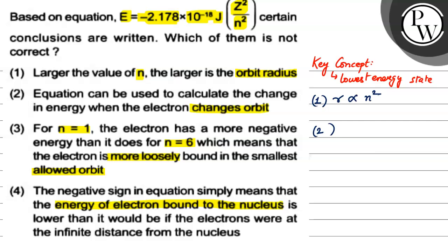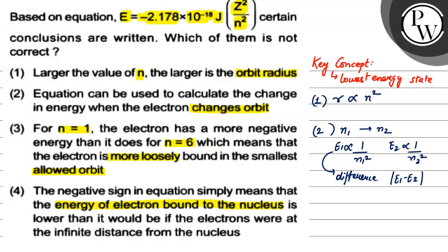Option two: the equation can be used to calculate the change in energy when the electron changes orbit. This is right. Because if we consider N1 as the first state and N2 as the second state, we can write E1 proportional to 1 by N1 square, and E2 proportional to 1 by N2 square, according to the formula given. From this equation, we can find the difference E1 minus E2, which is the energy change when the electron changes orbit. So that is the right option.